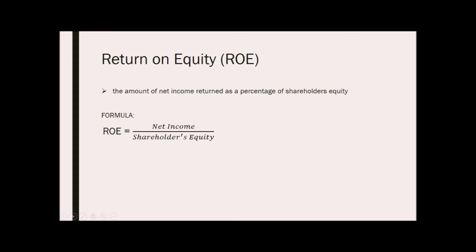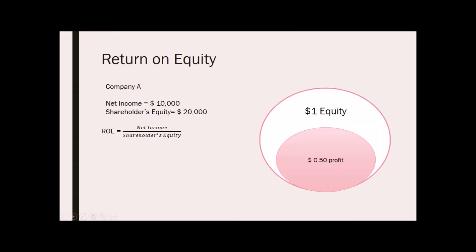For example, Company A has a net income of $10,000 and shareholders' equity of $20,000. By dividing $10,000 by $20,000, we get an ROE of 50%. This means that Company A generated $0.50 of profit for every $1 of shareholders' equity.